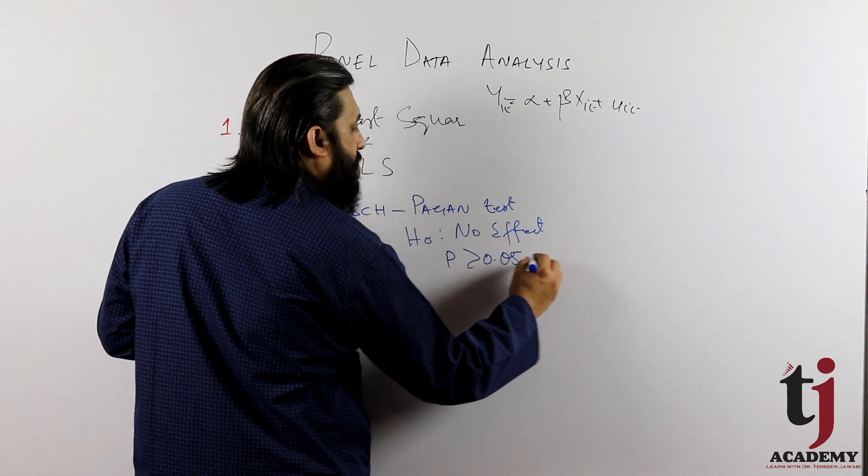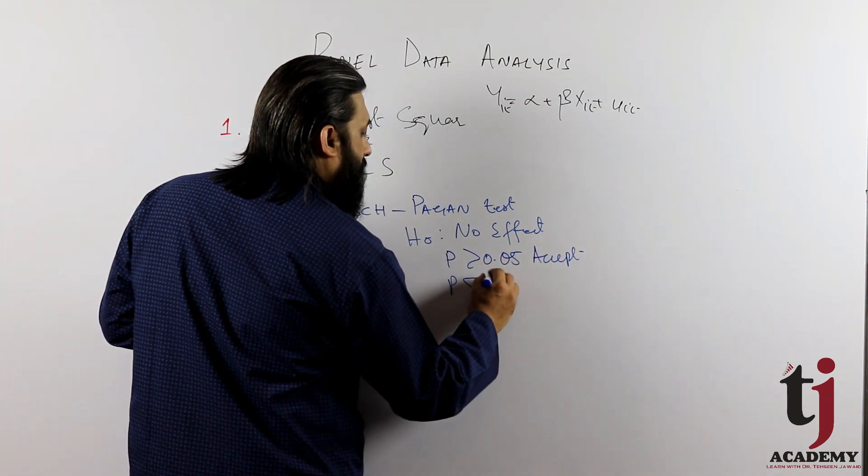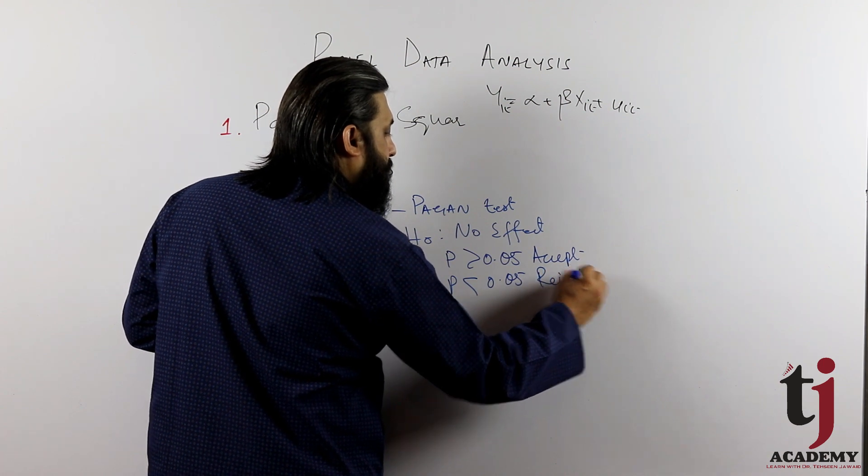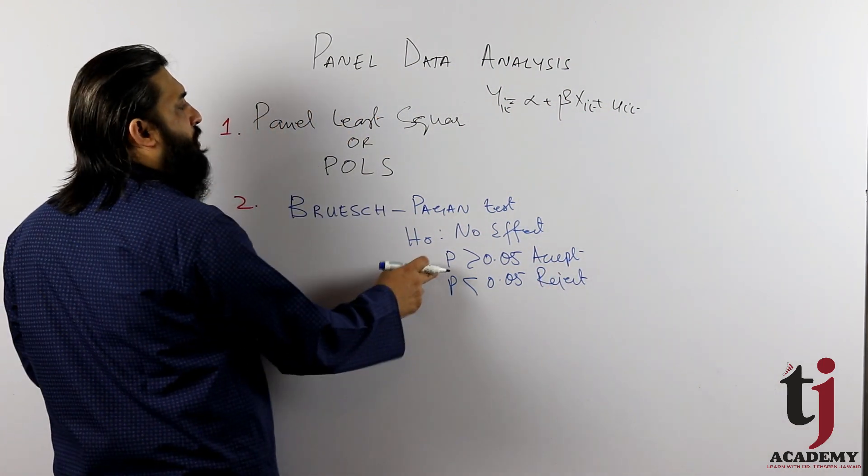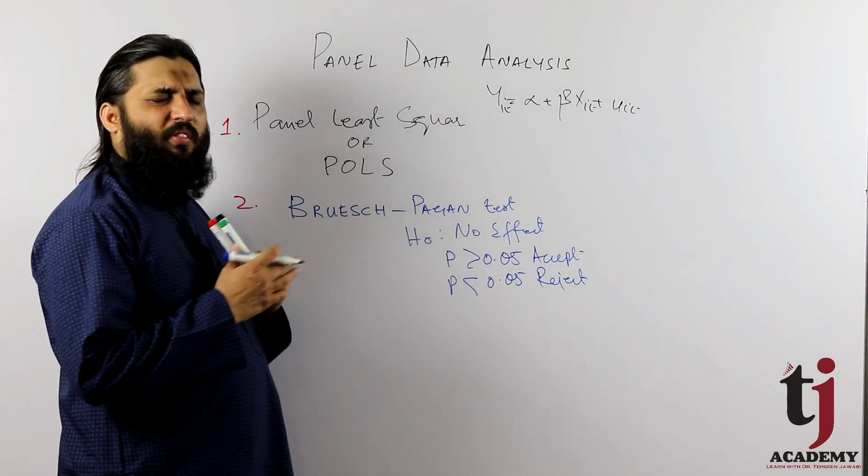greater than 0.05, then accept. And if less than 0.05, then reject. And accept, this is